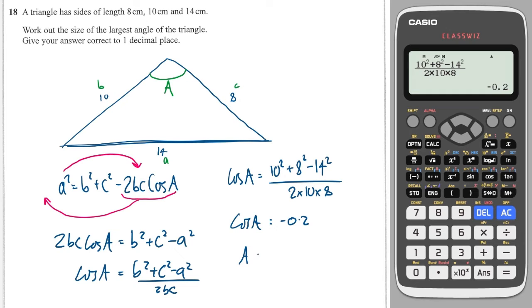And then I'll work out A by doing the inverse cosine of that value. So I'll do shift cos of the answer and I will get 101.5.